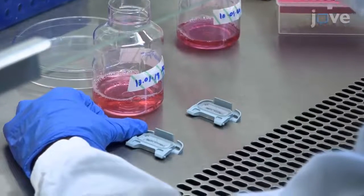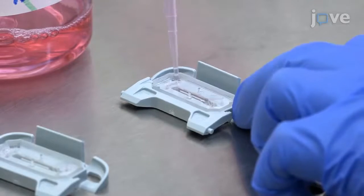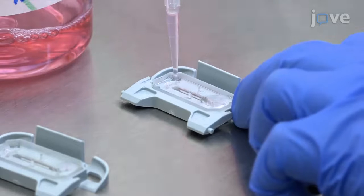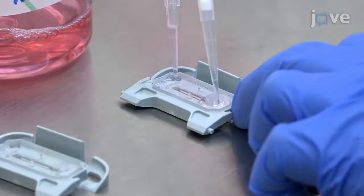Using a P200 pipette, gently wash both channels by adding 200 microliters of neural differentiation medium into the inlet and pulling the liquid from the outlet.